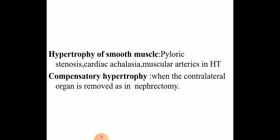Other examples of hypertrophy include hypertrophy of smooth muscle in pyloric stenosis, cardiac achalasia, muscular arteries in hypertension, and compensatory hypertrophy — for example, when the contralateral organ is removed, as in nephrectomy.